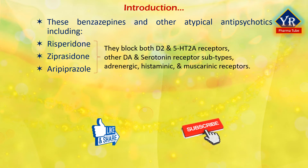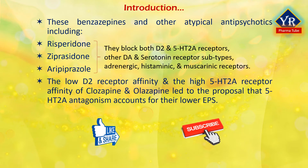They also block other dopamine and serotonin receptor subtypes, adrenergic, histaminic, and muscarinic receptors. The low D2 receptor affinity and the high 5-hydroxytryptamine-2A receptor affinity of atypical antipsychotics including clozapine and olanzapine led to the proposal that 5-hydroxytryptamine-2A antagonism accounts for their lower extrapyramidal symptoms.